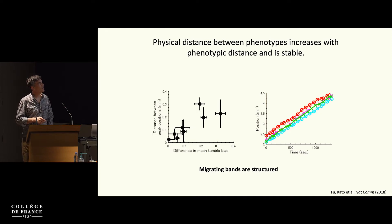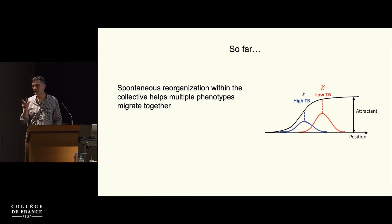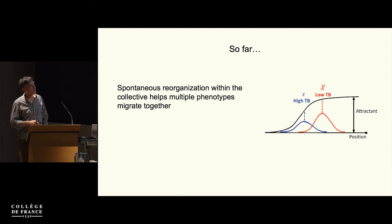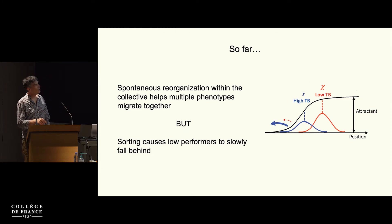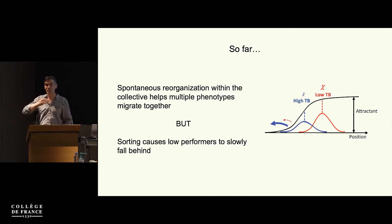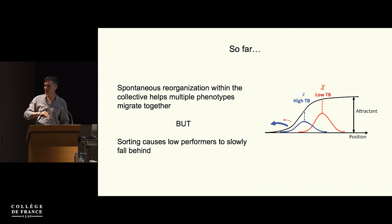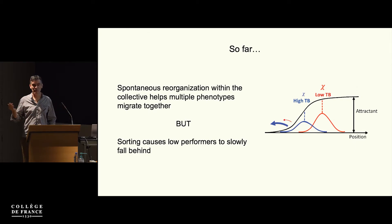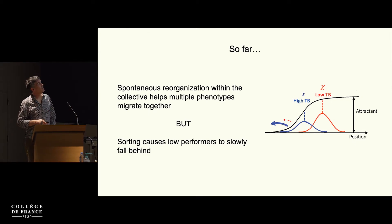So far, what I've told you is that there's spontaneous reorganization that helps maintain diversity while traveling together. But this has a consequence: cells at the very back have a higher chance to fall off, so there's a slow leakage of the weakest cells at the back. If you travel for a very long time in the same uniform environment without growth — since the experiment has the cell cycle arrested — you'll slowly start to lose diversity. Collective migration will tend to eliminate diversity slowly.